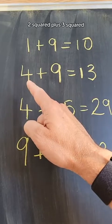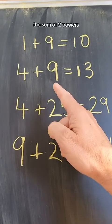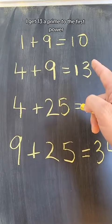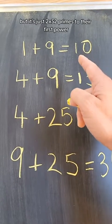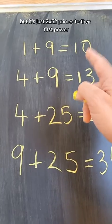So, for example, 2 squared plus 3 squared, the sum of two powers, I get 13, a prime to the first power. 1 plus 9, that's 10. It's not prime, but it's just 2 times 5, 2 primes to their first power.